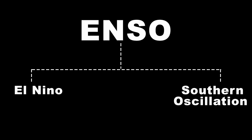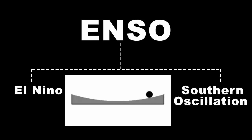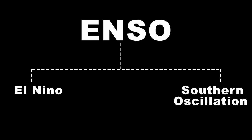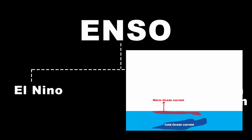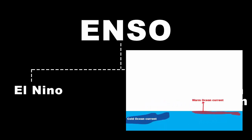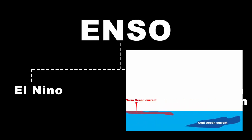When you look at the term oscillation, it gives us a hint that something oscillates from one place to another, or back and forth. Well, it's the temperature that we are talking about — and not just any temperature, ocean temperature. It is the ocean temperature that oscillates back and forth from warm to cold and vice versa.